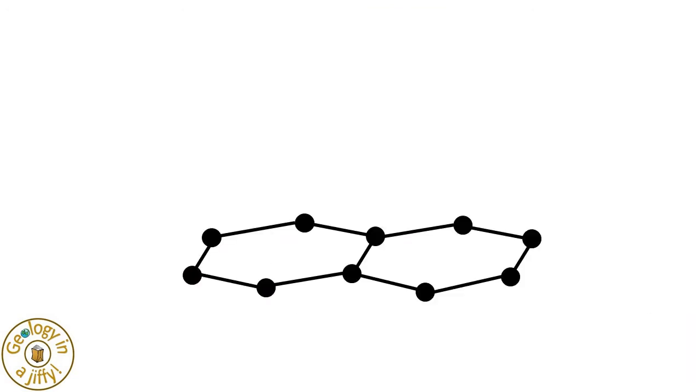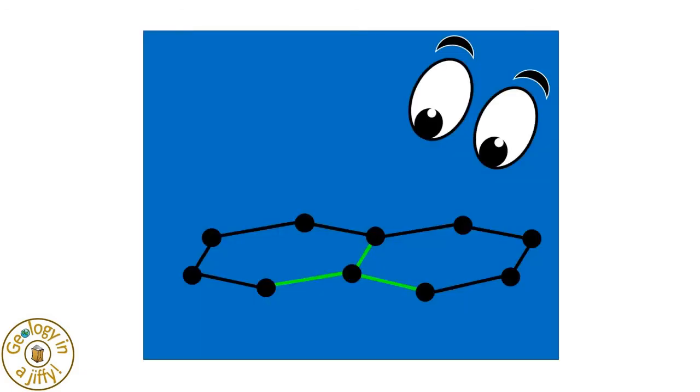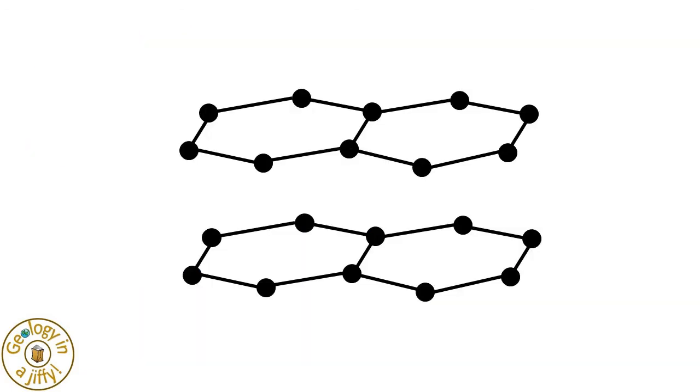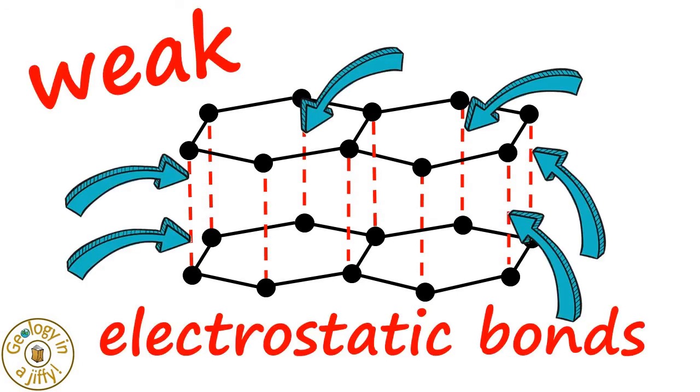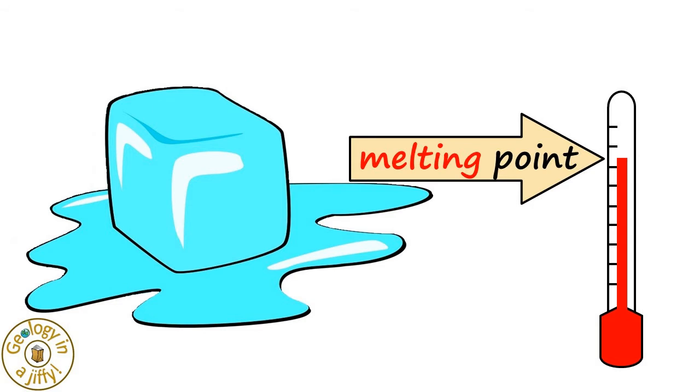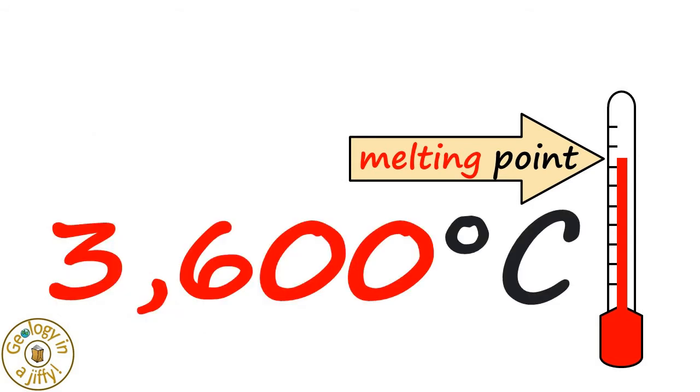Graphite has a very strong 2D layered network of carbon-carbon covalent bonds, which we see as only three strong bonds, leaving an area of weak electrostatic intermolecular forces between the layers of atoms. This structure gives graphite a very high melting point of 3600 degrees C.